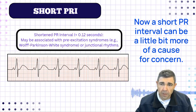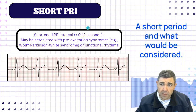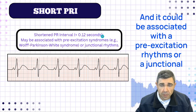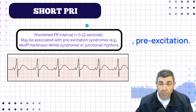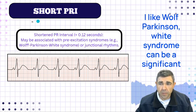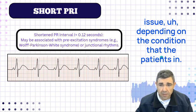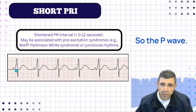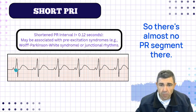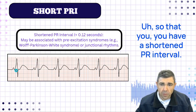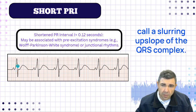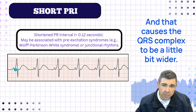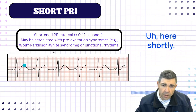A short PR interval can be more of a cause for concern. A short PR interval is considered less than 120 milliseconds or 0.12 seconds, and it could be associated with pre-excitation rhythms or a junctional rhythm. Junctional rhythm is not too much of a problem, but pre-excitation like Wolf-Parkinson-White syndrome can be a significant issue depending on the patient's condition. On this rhythm strip, you can see a very short PR interval — the P wave ends and the QRS complex begins immediately, with almost no PR segment. This shortened PR interval continues into what we call a slurring upslope of the QRS complex, called a delta wave, which causes the QRS complex to be a little bit wider.